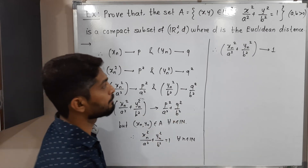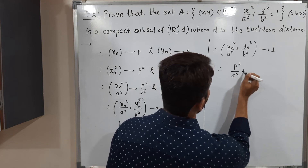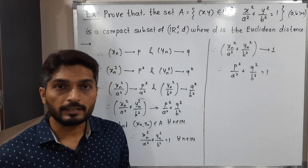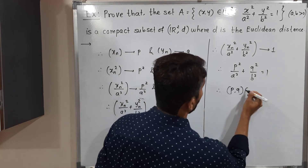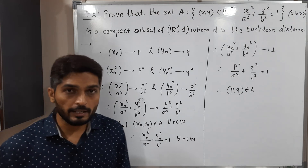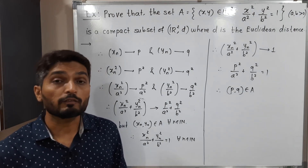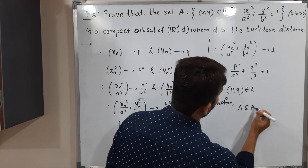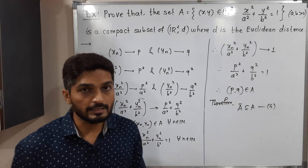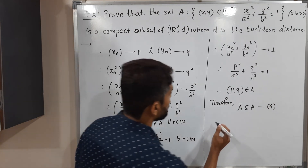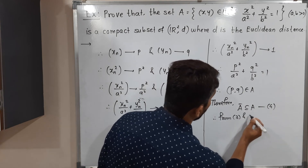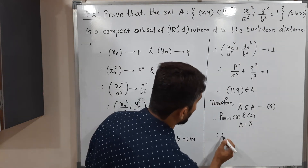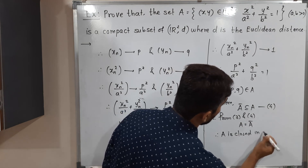Therefore p²/a² + q²/b² = 1, which means the point (p, q) satisfies the defining condition of A. Therefore (p, q) ∈ A. Since we started with an arbitrary point (p, q) ∈ Ā and showed it belongs to A, we have Ā ⊆ A — call this (4). From (3) and (4), A = Ā, which is the definition of a closed set. Therefore A is closed in R²D.